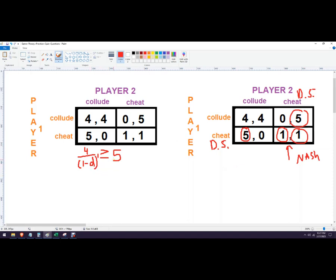Let's solve for D. This is the value of the discount rate we'll need to see, at least this rate, to get us to collude. We're going to rearrange and multiply, so five minus five D.